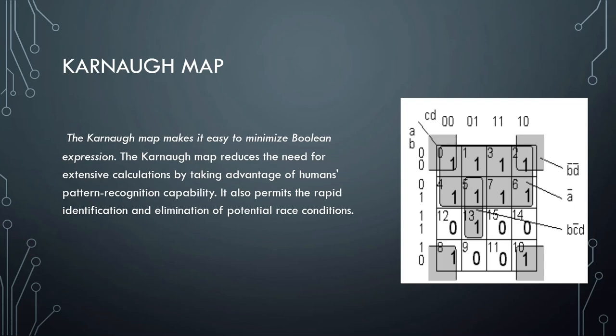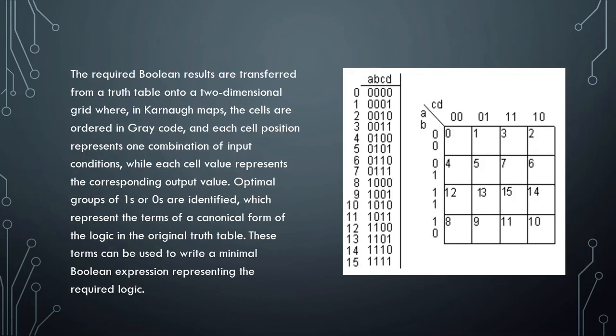It also permits the rapid identification and elimination of potential race conditions. The required boolean results are transferred from a truth table onto a two-dimensional grid where the cells are ordered in grey code, and each cell position represents one combination of input conditions, while each cell value represents the corresponding output value. Optimal groups of ones or zeros are identified which represent the terms of a credential form of the logic in the original truth table. These terms can be used to write a minimal boolean expression representing the required logic, as you can see in this picture.